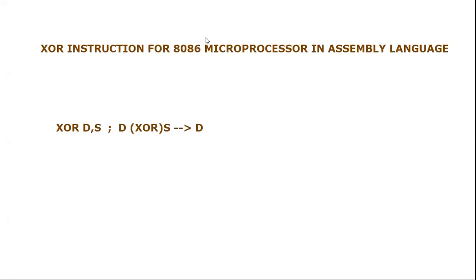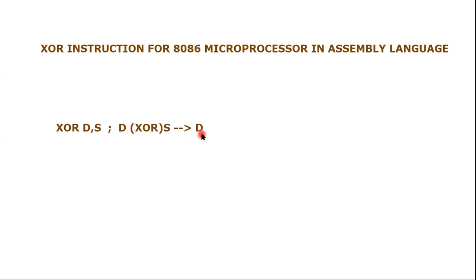Assalamualaikum everyone. In this video tutorial we are going to learn a new instruction, XOR, for the 8086 microprocessor in assembly language. The instruction format is quite simple: XOR D, S — where D is the destination operand and S is the source operand. It is also part of logical instructions, as we have discussed with AND and OR instructions before. The destination and source will be used as operands and the XOR operation result will be stored in the destination.